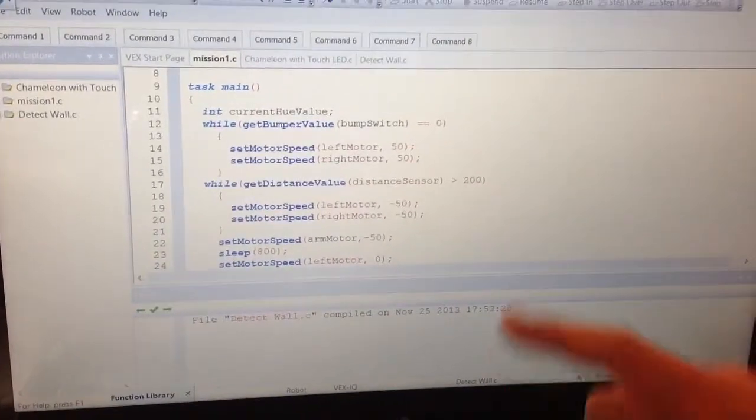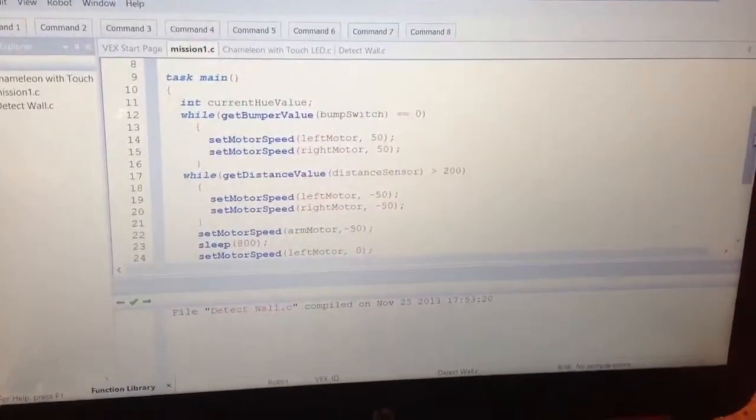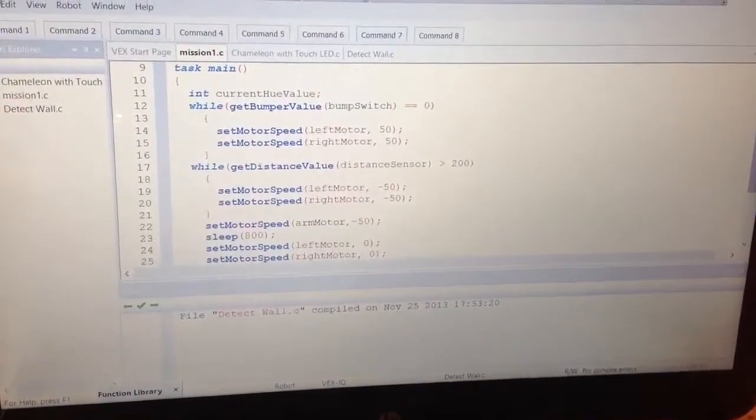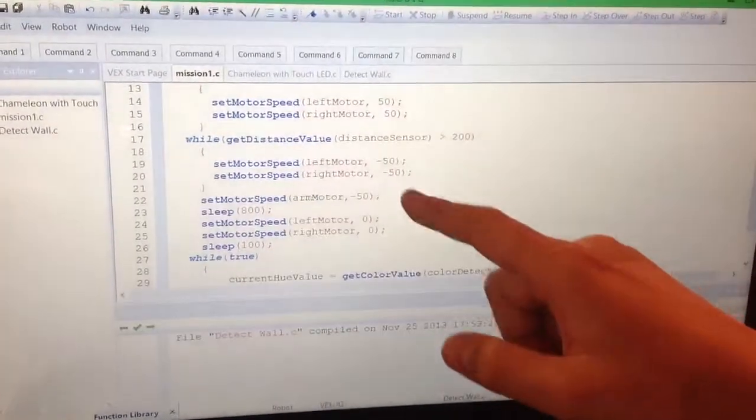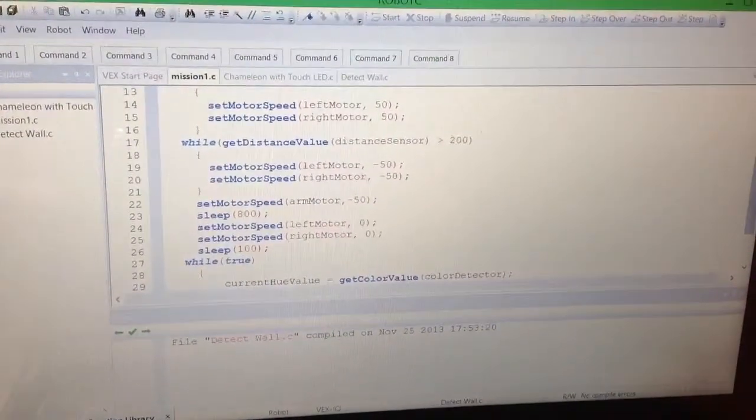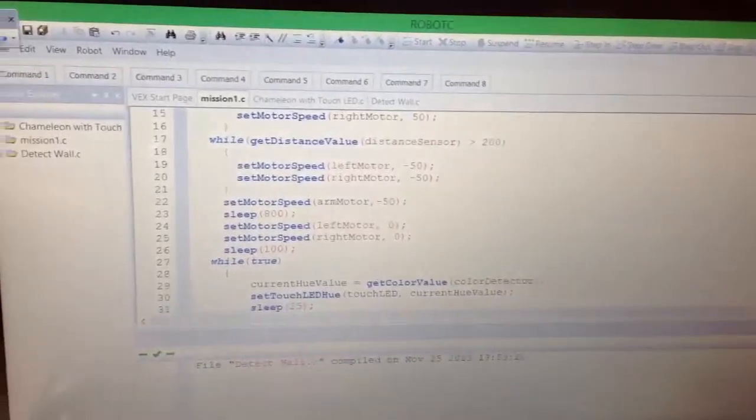This means this is the first part of the mission. It goes until the bumper switch touches, then it backs up until the distance sensor senses less than 20 centimeters.